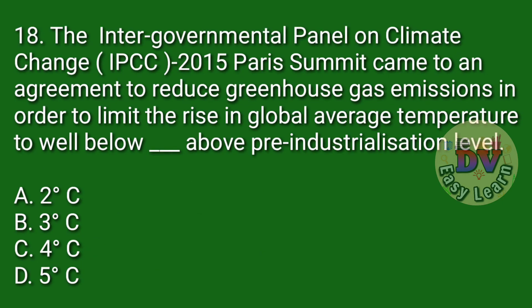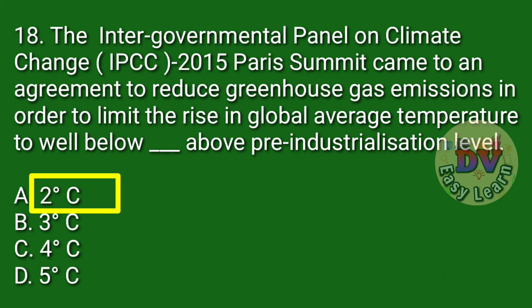Question number 18. The Intergovernmental Panel on Climate Change — at the 2015 Paris Summit — came to an agreement to reduce greenhouse gas emissions in order to limit the rise in global average temperature to well below — Correct answer: 2 degrees Celsius above pre-industrial levels.